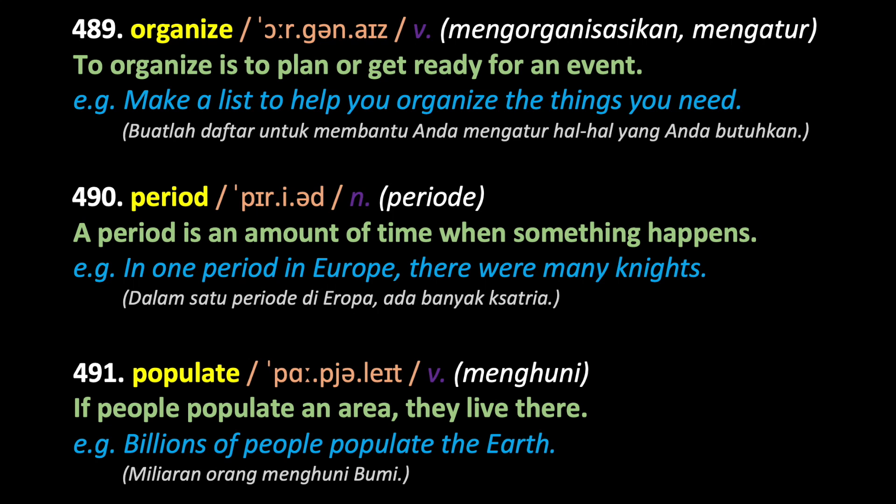In one period in Europe, there were many knights. Populate — if people populate an area, they live there. Billions of people populate the earth.